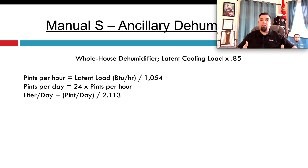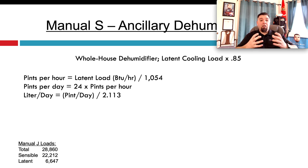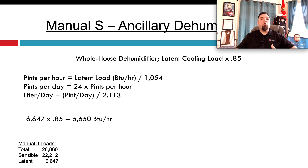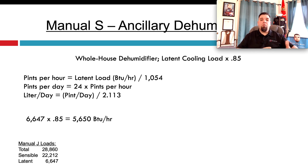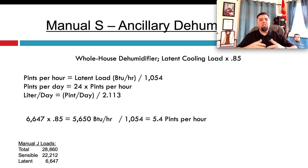That latent load is in BTUs, so we need to convert BTUs over to pints per day or liters per day, because that's how we rate dehumidifiers. Here in the United States, manufacturers rate them in pints per day. Taking the fictional load calc from earlier, I need 6,647 BTUs. We take 85% of that, which is 5,650 BTUs — that's our target. We then divide by 1,054, the constant to convert BTUs per hour to pints per hour, giving us 5.4 pints per hour.